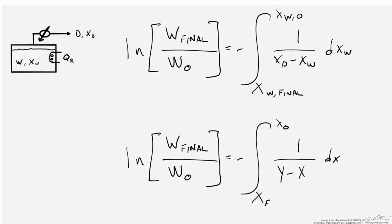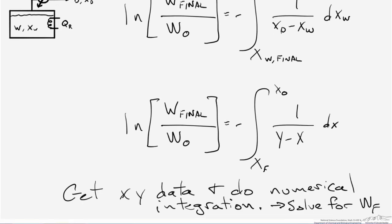We changed our limits of integration to correspond to taking the integral with respect to the liquid composition, and now we're integrating from the final liquid composition to the original liquid composition, much in the same way as the original Rayleigh equation. Now we have an expression we can solve for the final number of moles of liquid in the still when we're done running the still. Our plan for solving this equation is to get the x-y data, or the vapor-liquid equilibrium data for this ethanol-water system, do the numerical integration on the right-hand side, and then use this to solve for that final amount of moles in the still.